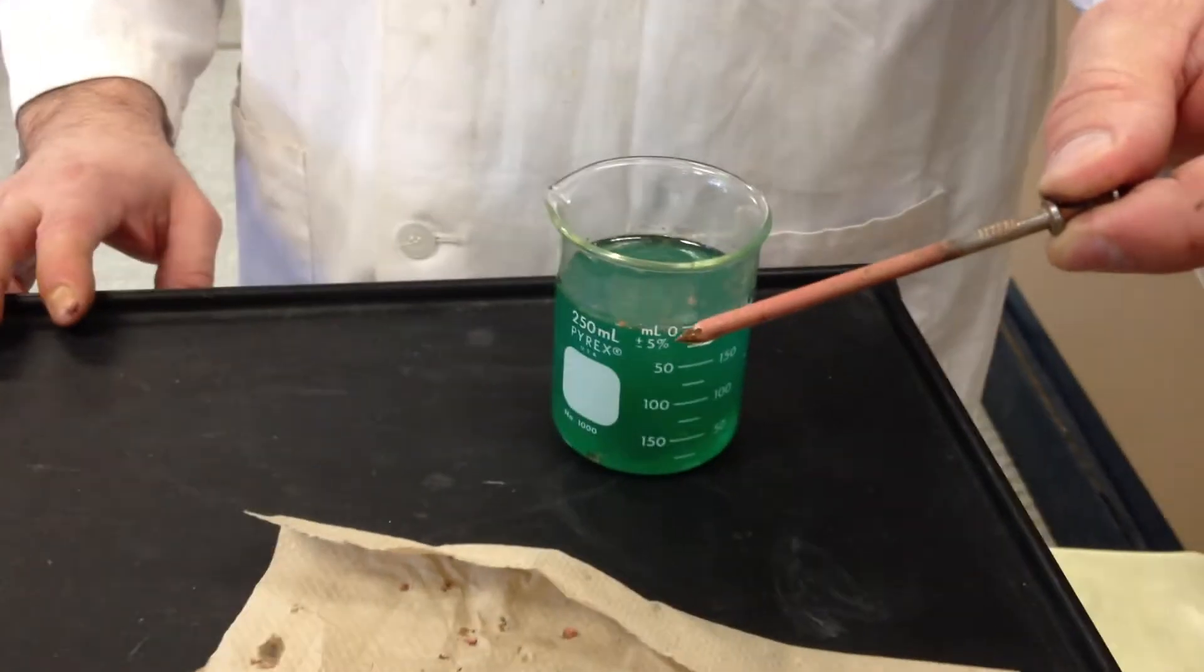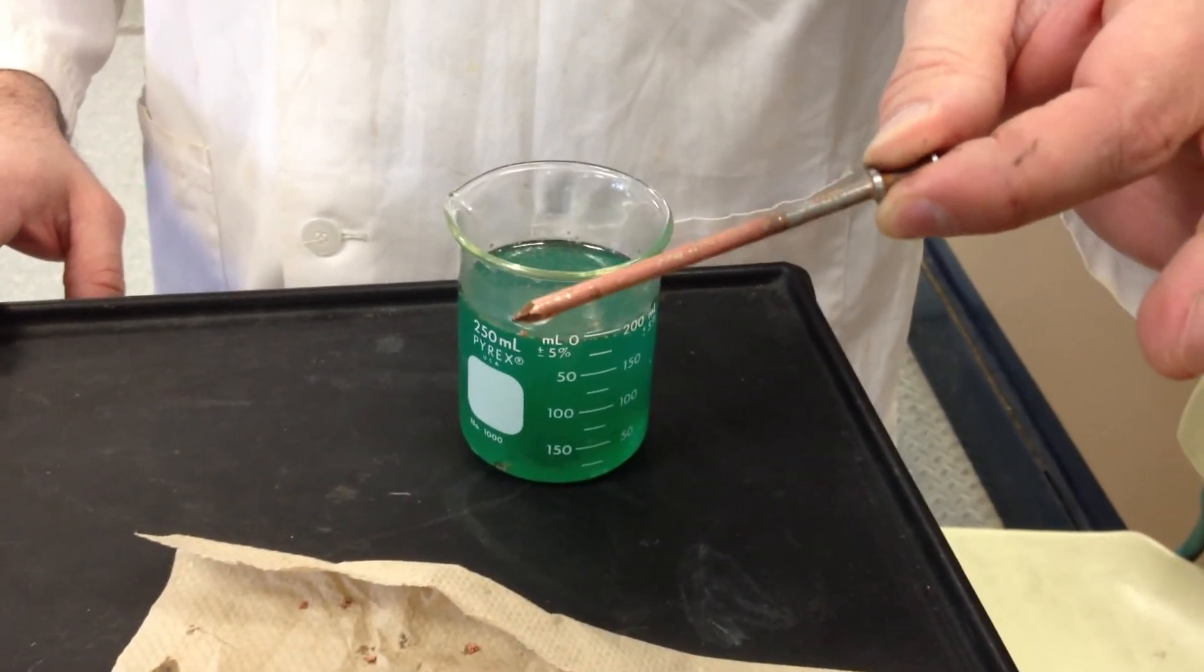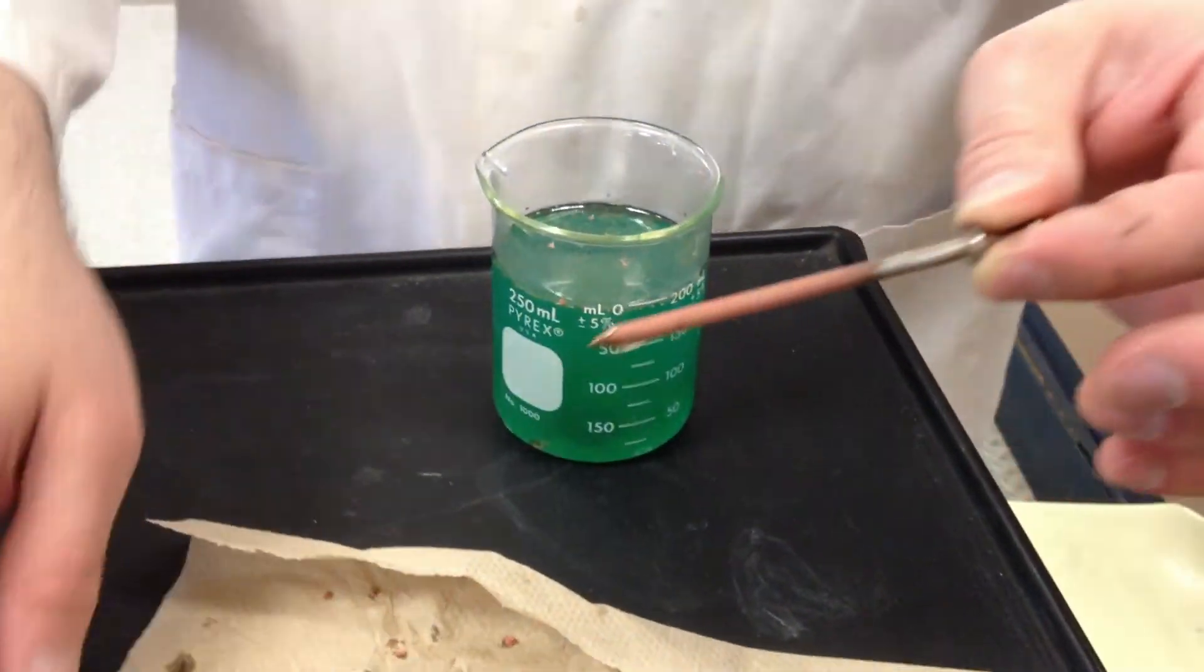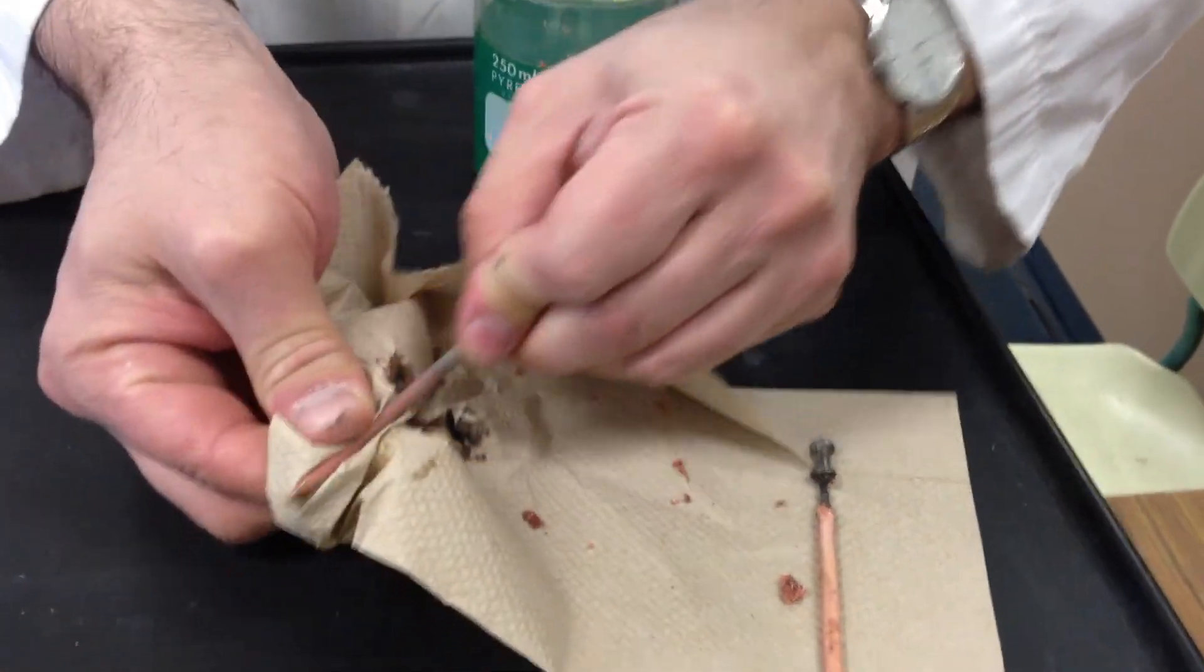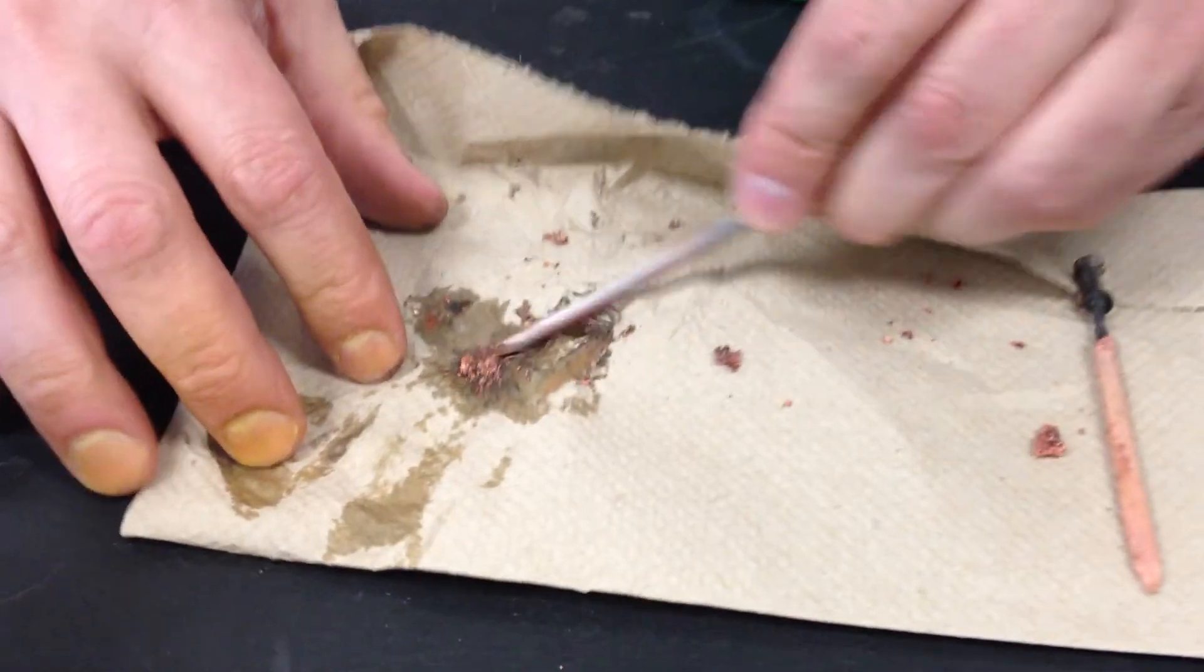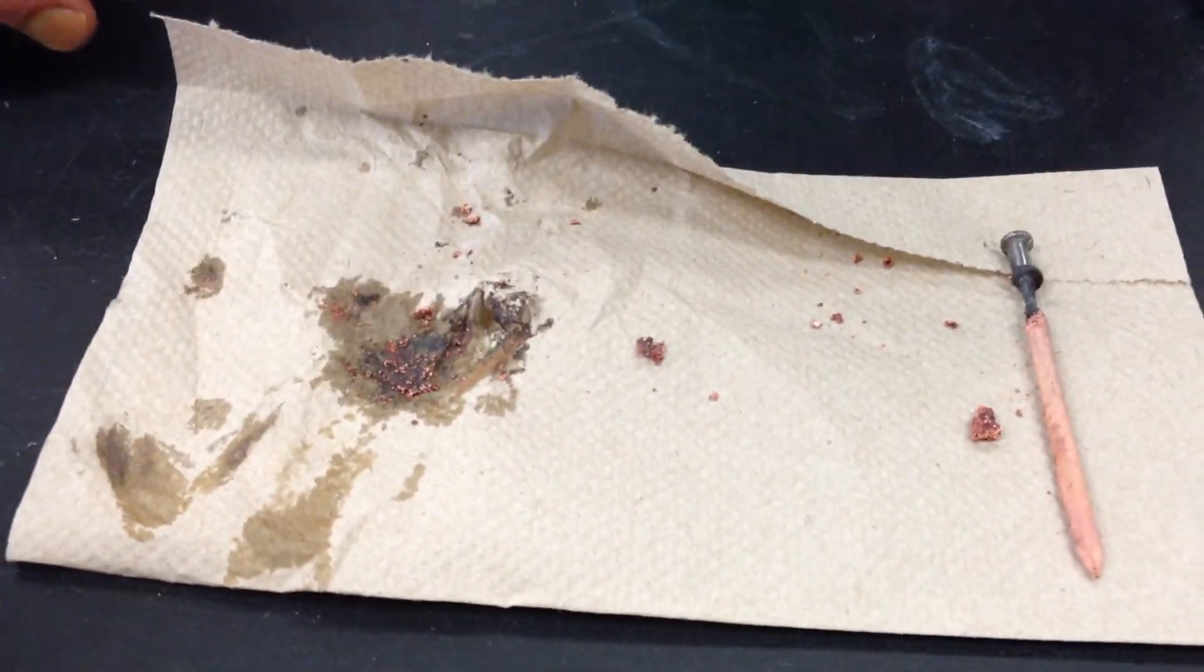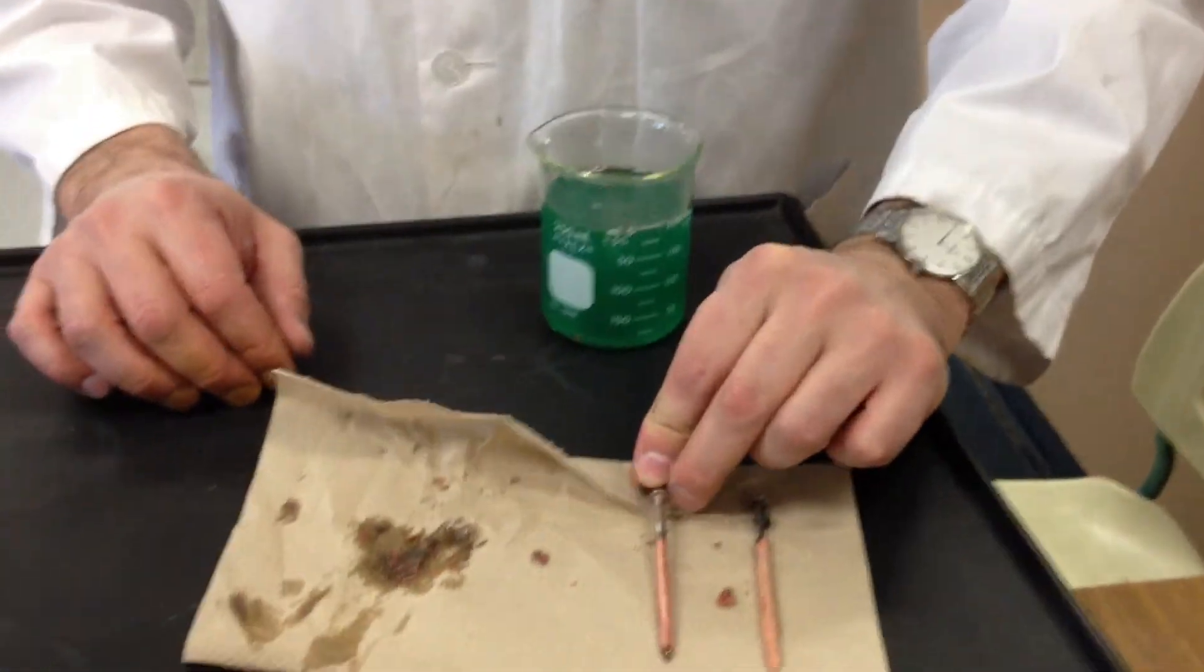So clearly iron is higher on the activity series than copper. It'll force the copper to take the electrons and it'll reduce onto the surface of the nail. This doesn't adhere quite as well - I guess it hasn't had the time. So you can wipe it off, but you see metallic copper on the napkin. There it is again.